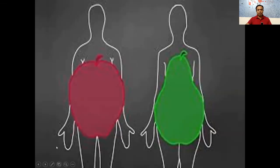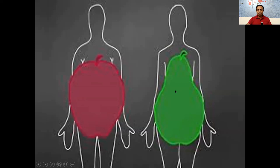Studies have found that there are two types of body. Those who have an apple-shaped body — where fat is deposited around the waist — have a high predisposition for obesity, diabetes, and heart disease. While those who have a pear-shaped body, where the waist is lean and maximum fat is accumulated around the buttocks and thighs, have less chance of developing obesity, diabetes, and heart disease.